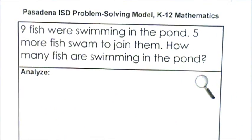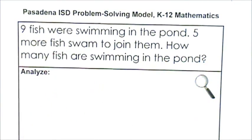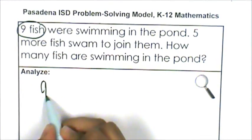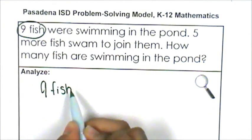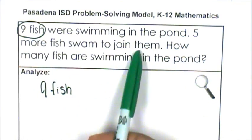What information do I know? Well, I know that there were nine fish swimming. So, I have nine fish that were swimming and then five more fish swam to join them.